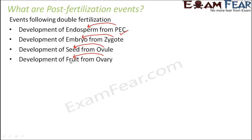Now you understand why plants have flowers — only after flowers are formed are you able to find fruits on that plant. For example, if you plant any fruit tree like mango or guava, you wait for when the flowers come up. Until flowers develop, the tree is still in the juvenile vegetative phase, meaning it is not capable of sexual reproduction.